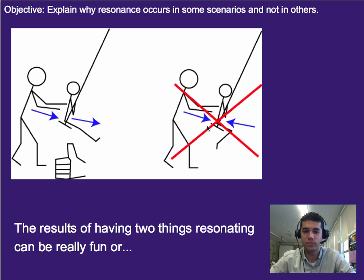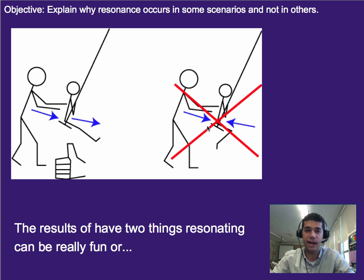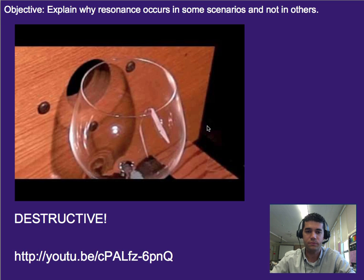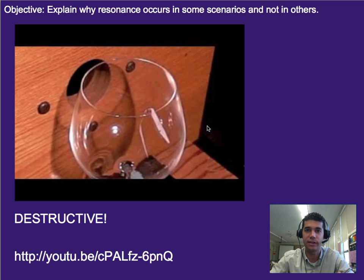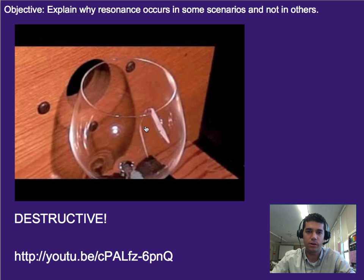So the results of having two things resonating can be really fun, like a swing, or it can be kind of destructive, such as a wine glass. If you play the correct note — in other words, its natural frequency — you can get a wine glass to shatter. This is like opera singers singing and getting a glass to shatter; that's because they're playing the correct note. So I'm going to walk you through this video real fast, we'll watch it together, and then I'll let you just watch it on your own.